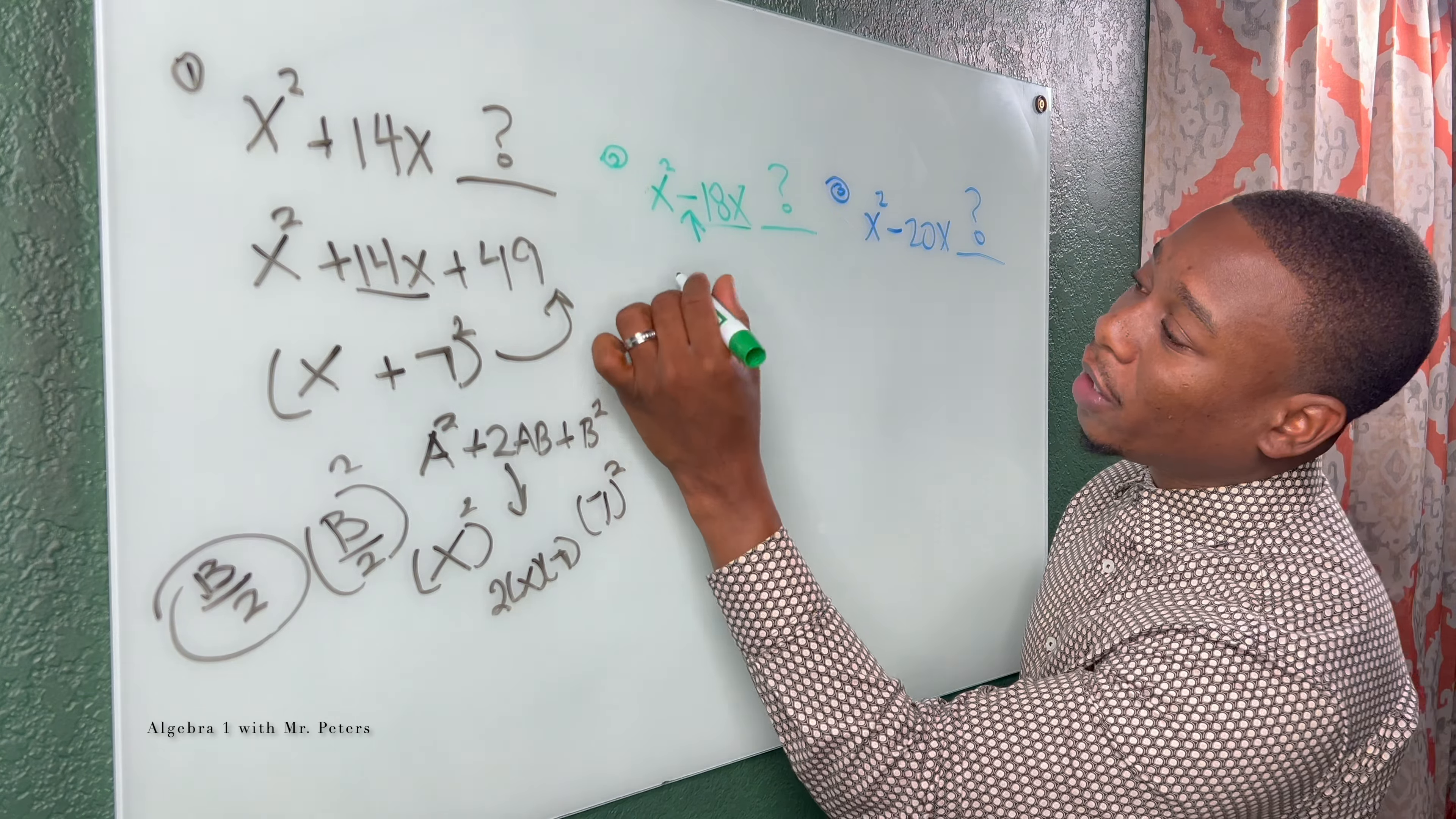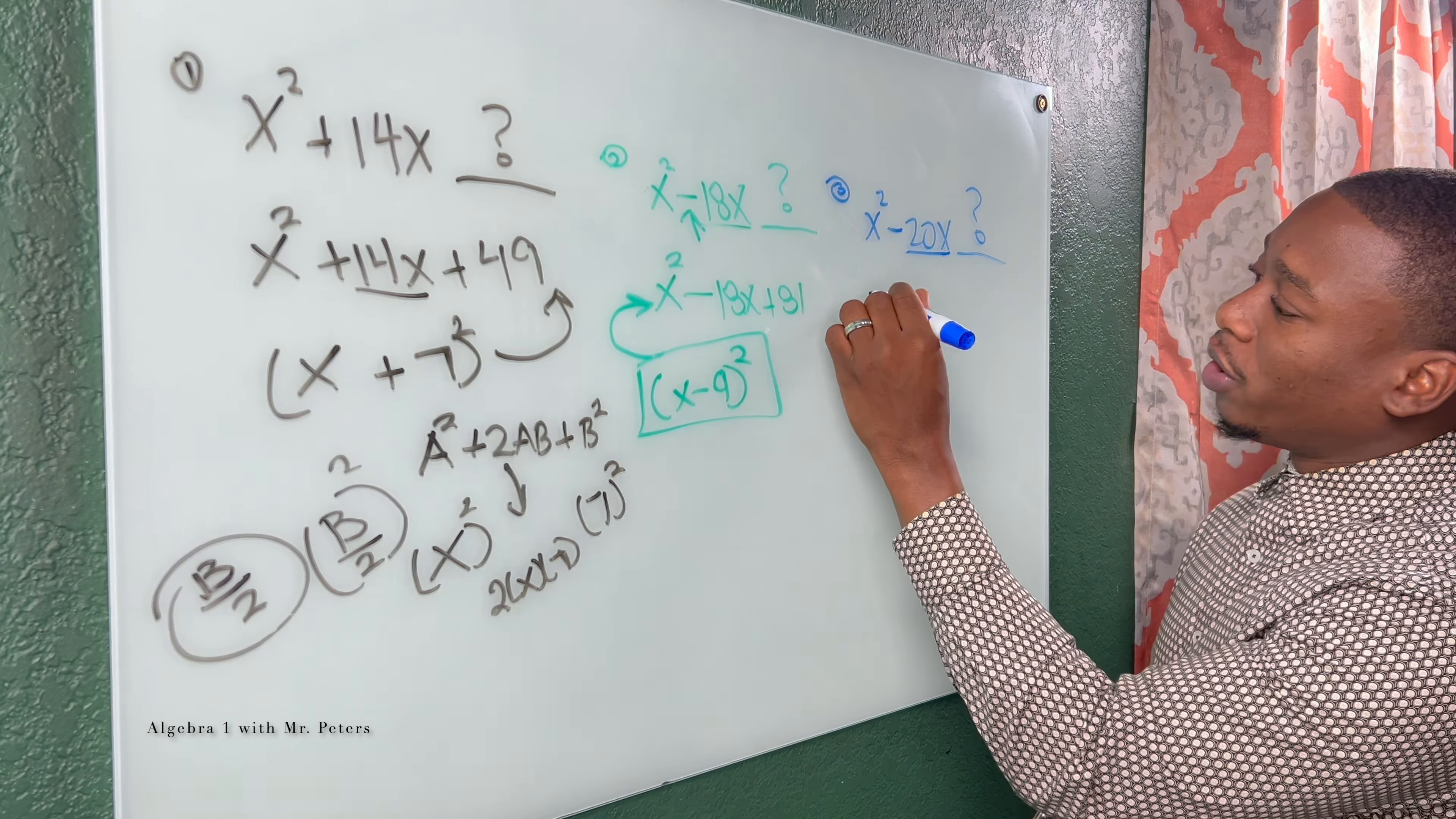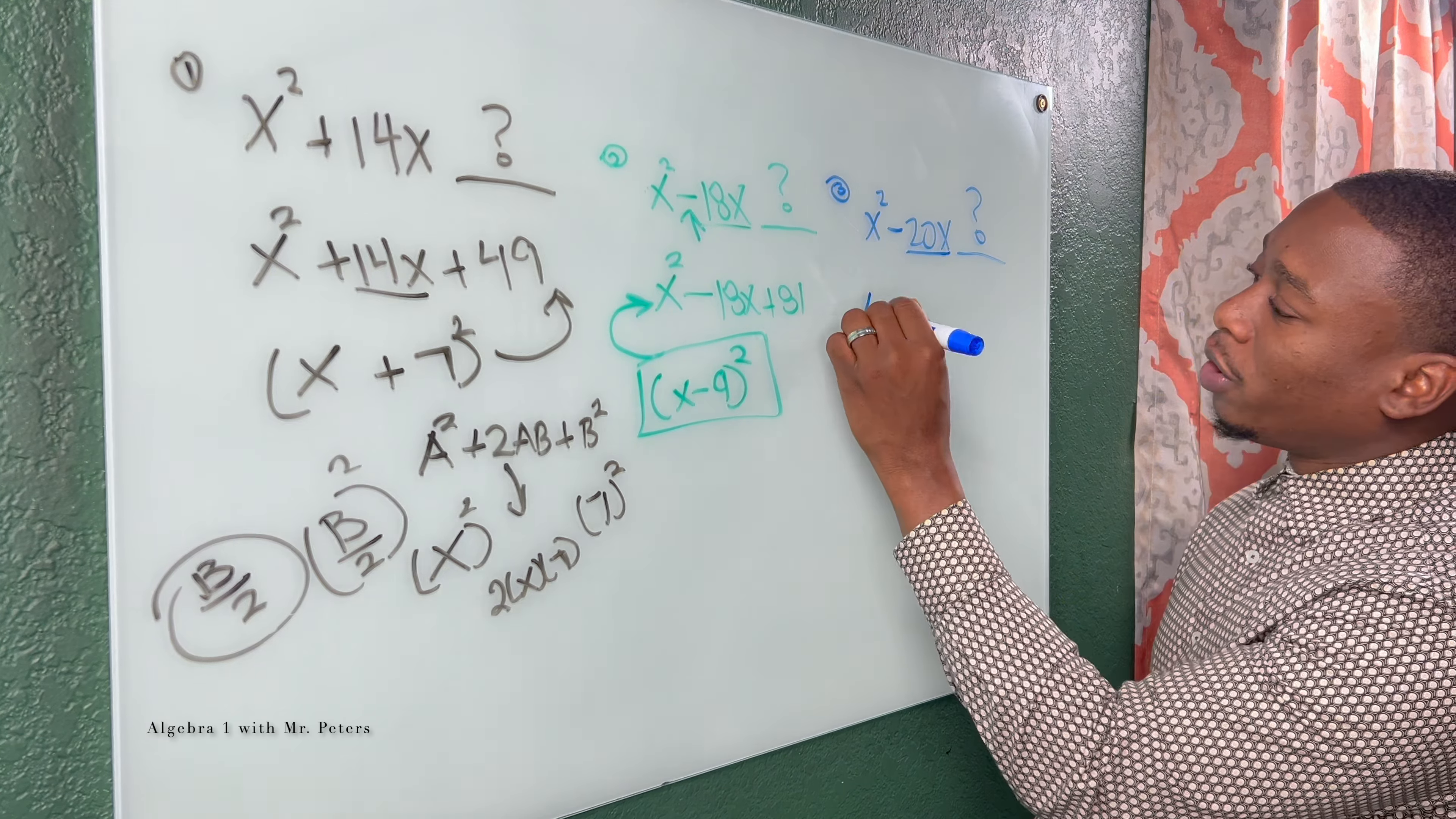And in our last problem of the day, very simple, same exact steps. Half of 20 is 10, 10 squared is 100. So this is x squared minus 20x plus 100. This is our perfect square trinomial.